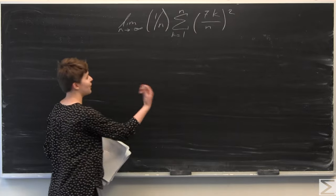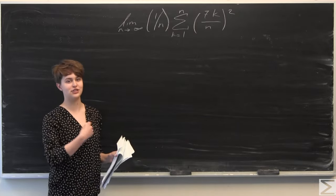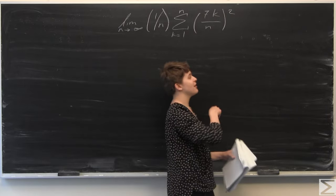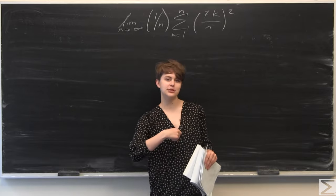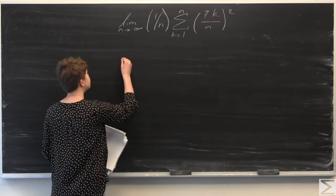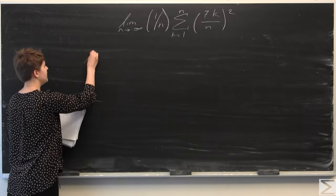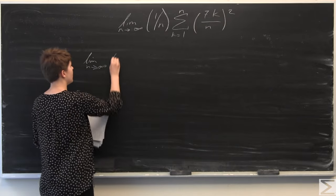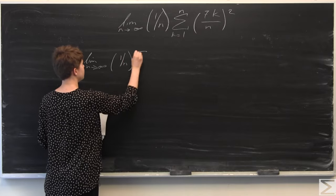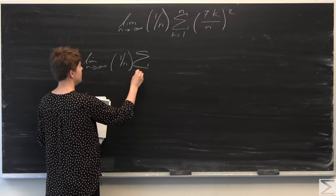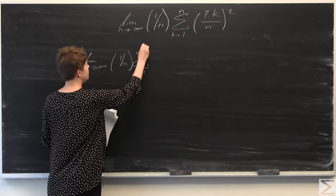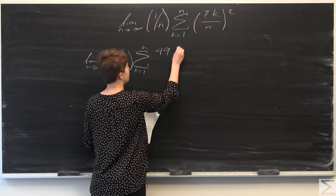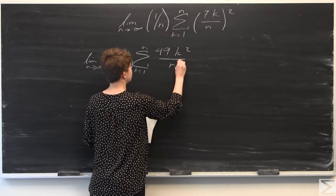So first, we're going to go ahead and pull out terms from the summation that don't depend on k. As you can see here, we have this entire thing squared, and that means that we square the numerator and we square the denominator. So we can simplify this as the limit as n goes to infinity of 1 over n times the summation from k equals 1 to n. We square the numerator, so we have 49k squared all over n squared.